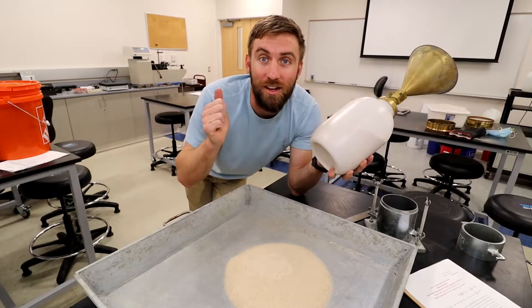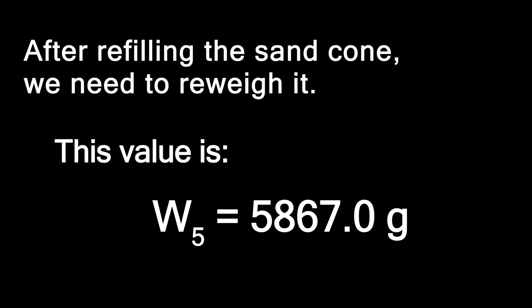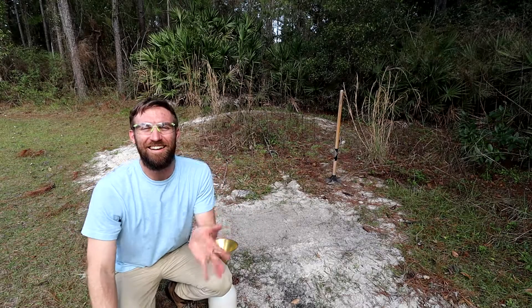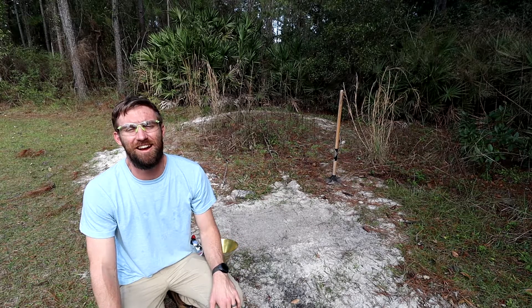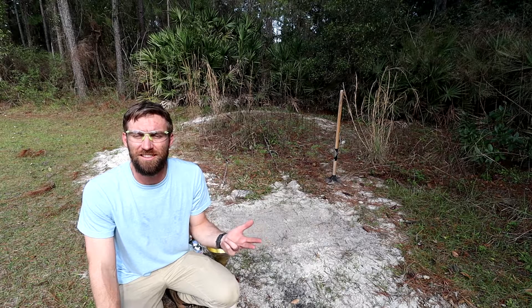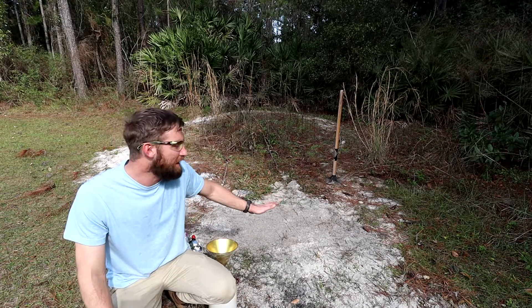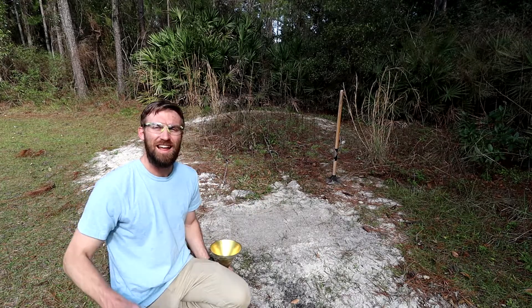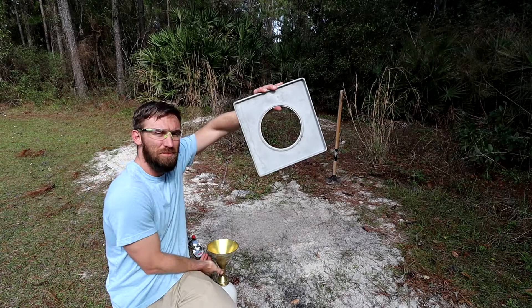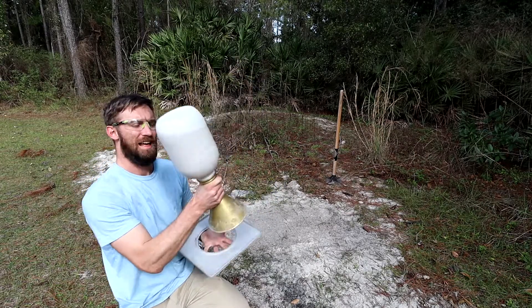Now we put the sand back in and we're ready to go out to the field to dig our hole and take our density. Out in the field, on a real project we'd be doing the sand cone test where we actually care about density — like a foundation, roadway, or construction site. Here we have our compacted soil and we need to find its density. We use a template that's the same diameter as the sand cone and mold, place it on the compacted area, and dig a cylindrical hole approximately four inches in diameter.